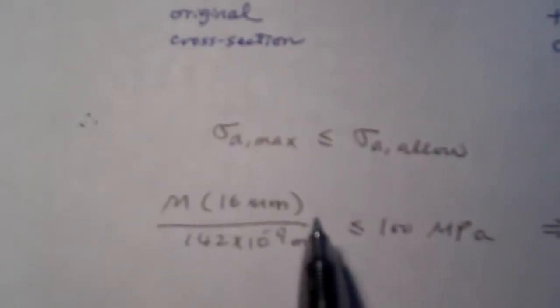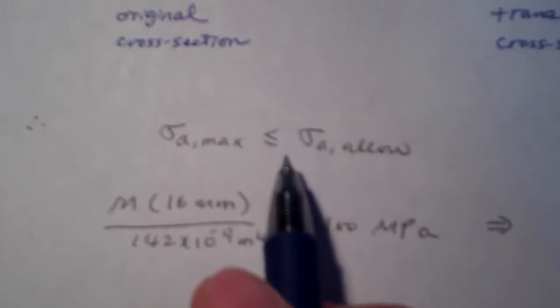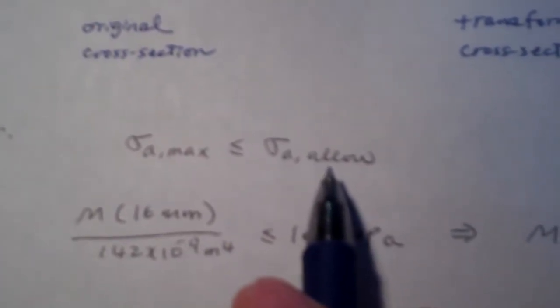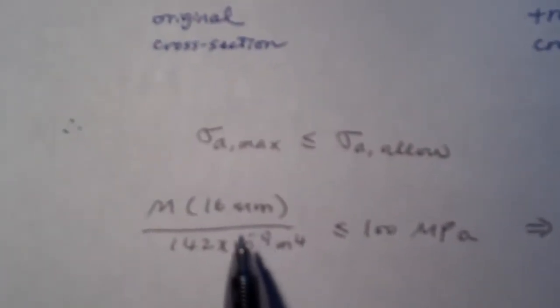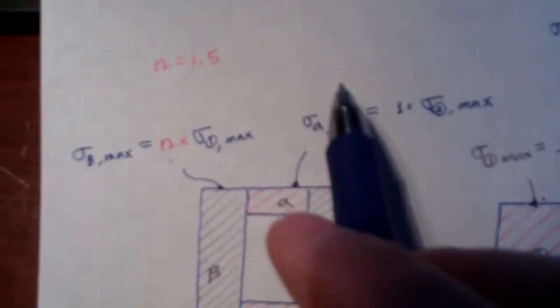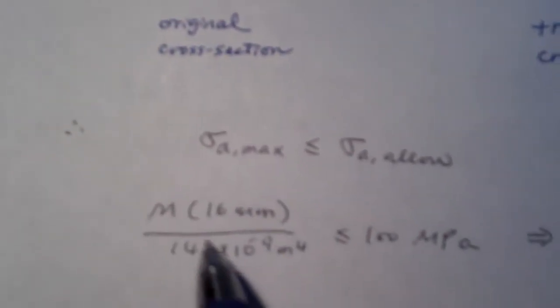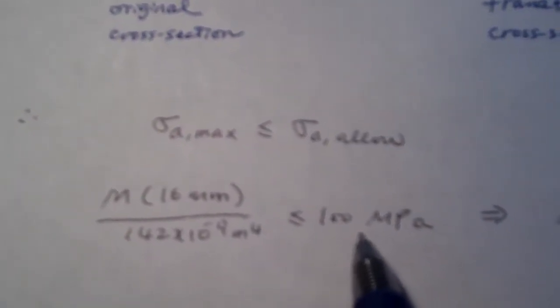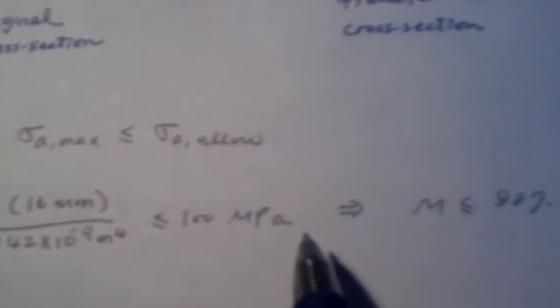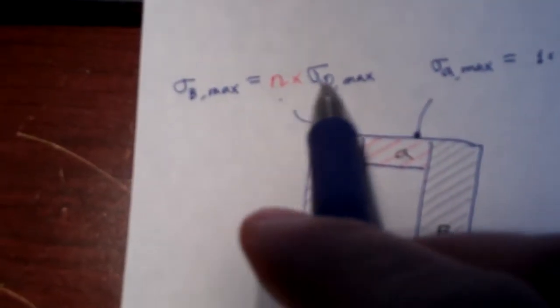For this problem, the design criteria is this. The maximum stress must be less than or equal to the allowable stress. So for aluminum, we plug in this information. We calculate it as this value, less than or equal to 100 MPa, which is given.